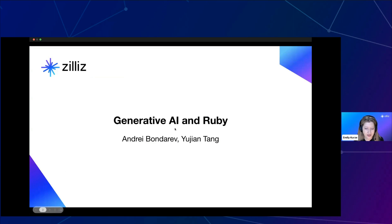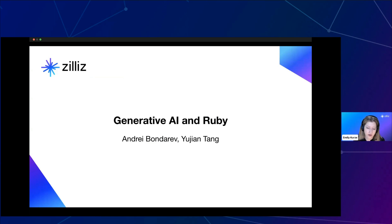Today I'm pleased to introduce our session: Building a Gen AI App End to End with Ruby. Our guest speaker Andre Bondarev has been a software engineering professional for almost 13 years, having made impact at Spree Commerce, Wedding Wire, Fiscal Note, National Public Radio, and USA Today. He currently runs a software development firm and serves as architect, engineering manager, and fractional CTO. He is joined by Yujin Tang, a developer advocate at Zilliz.